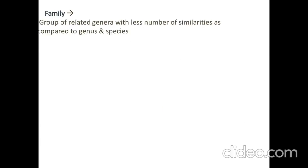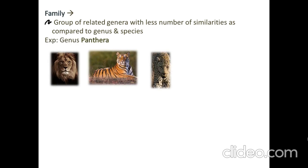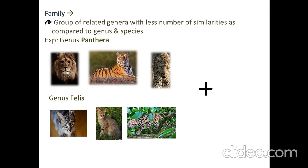Next is family — a group of related genera with fewer similarities compared to genus and species. For example, genus Panthera includes lion, tiger, and leopard. Another genus, Felis, includes domesticated cat, jungle cat, and leopard cat. These genera together belong to the same family.